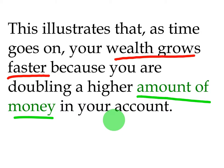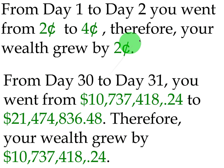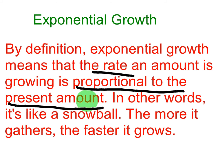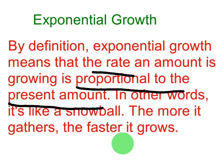The reason it grew more from day 30 to 31 was because there was much more in the account on day 30 than on day one, where it only doubled a penny. It's like a snowball effect — the more it gathers, the faster it grows. This is why people always encourage you to put money into an interest account when you're young, because by the time you get old, you'll see that money grow faster and faster.